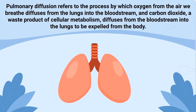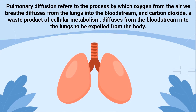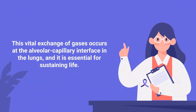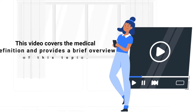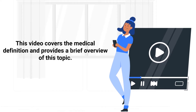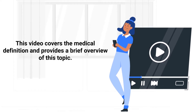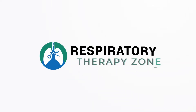Pulmonary diffusion refers to the process by which oxygen from the air we breathe diffuses from the lungs into the bloodstream, and carbon dioxide, a waste product of cellular metabolism, diffuses from the bloodstream into the lungs to be expelled from the body. This vital exchange of gases occurs at the alveolar-capillary interface in the lungs and is essential for sustaining life. This video covers the medical definition and provides a brief overview of this topic.